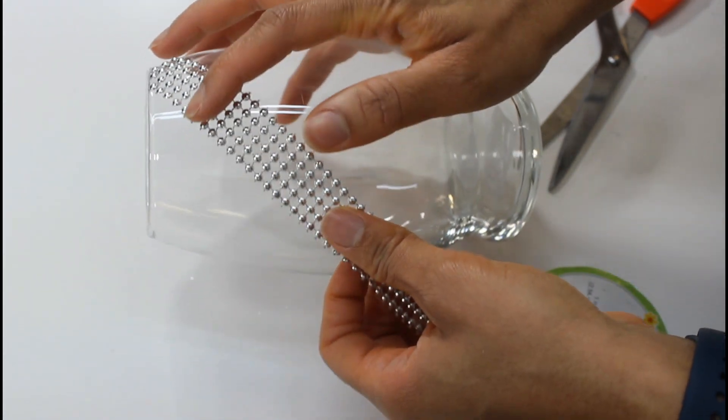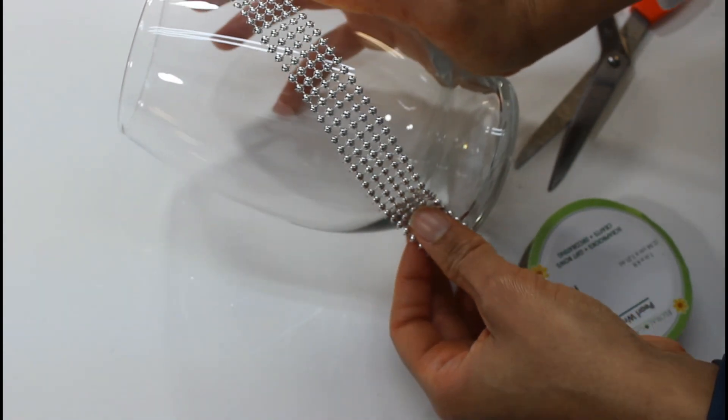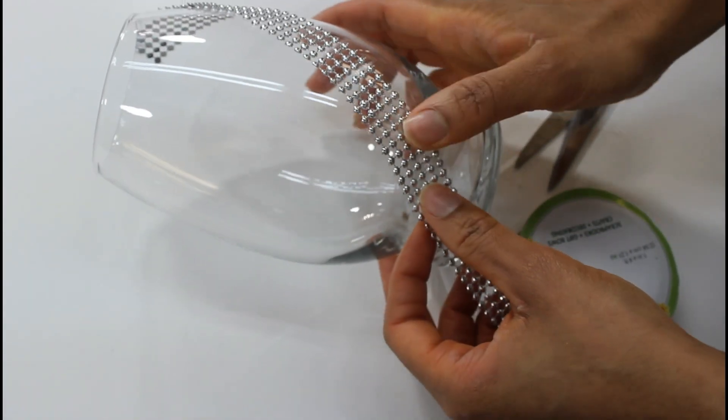For this project, I'm going to be using my hot glue sparingly. This is because I didn't paint the glass and I don't want a lot of glue showing.